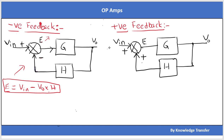In this negative feedback system, for some certain input and reference we were expecting V0, and it was coming as V0. But because of some disturbance at the output, V0 suddenly increased by some delta V0. In a stable system, because of this disturbance V0 became V0 plus delta V0, and in the next cycle by completing the whole feedback loop it should decrease V0 back to the previous value, so that the disturbance delta V0 is eliminated.